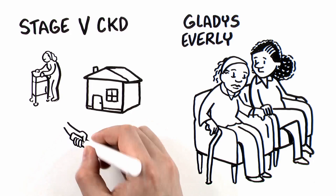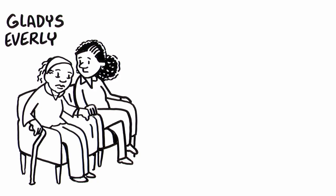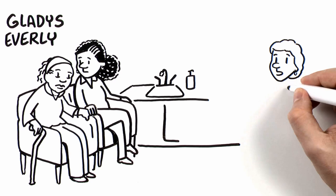She used to enjoy gardening, but now struggles with mobility. When you saw her three months ago, her EGFR was 16. Today, it's 13. You know Gladys well after seeing her for three years, but this appointment will be different.